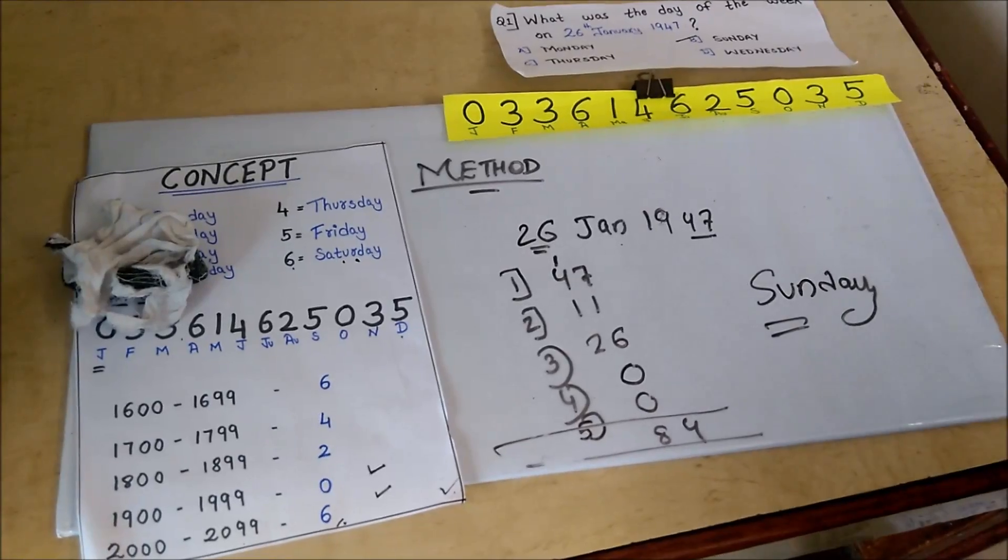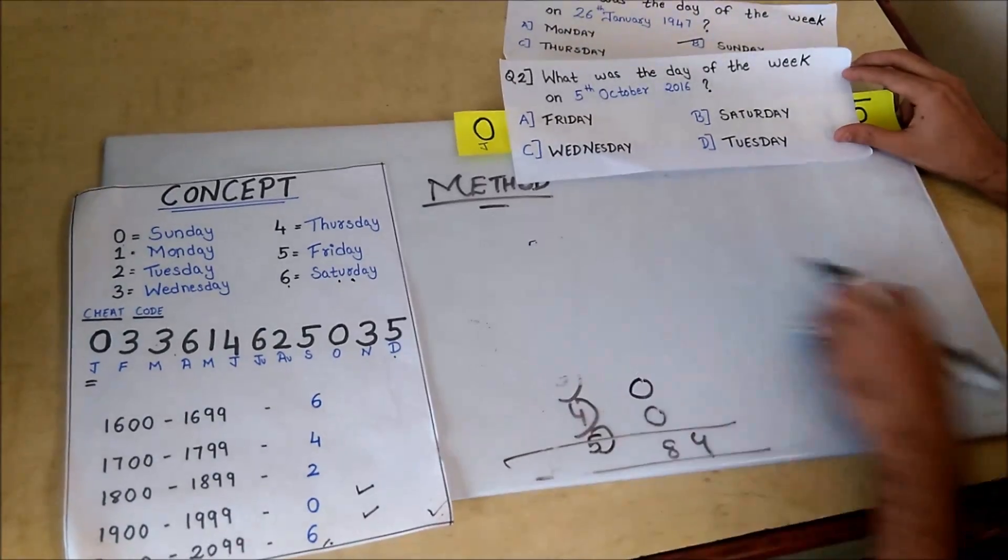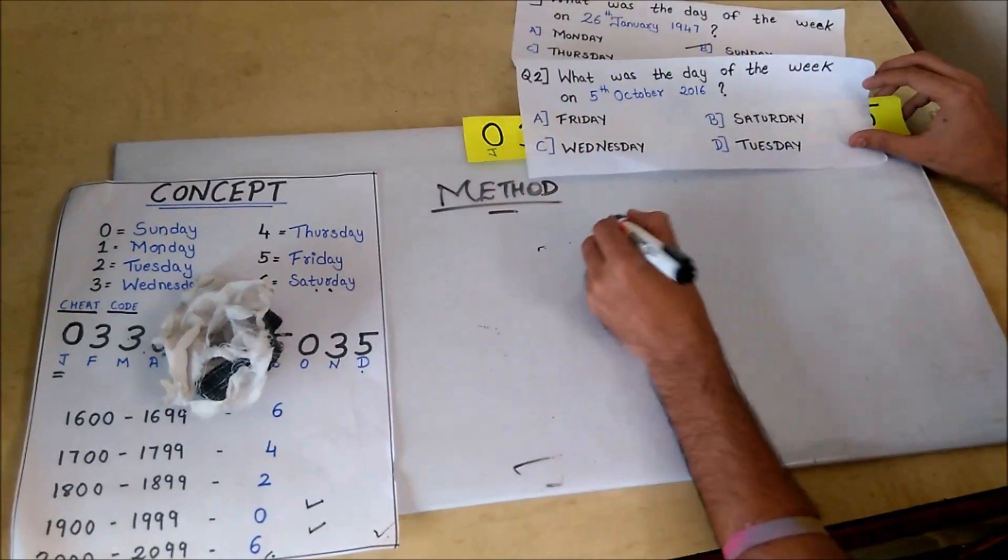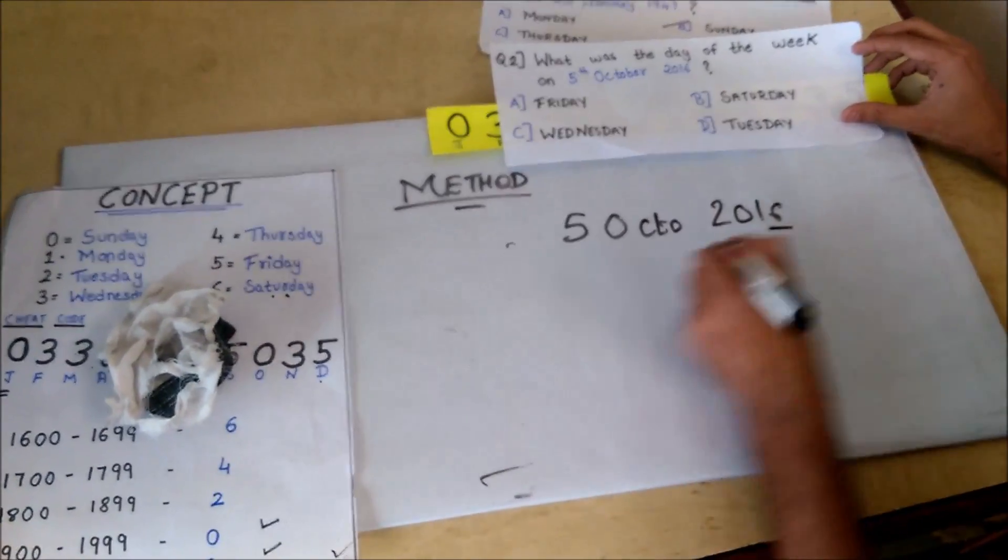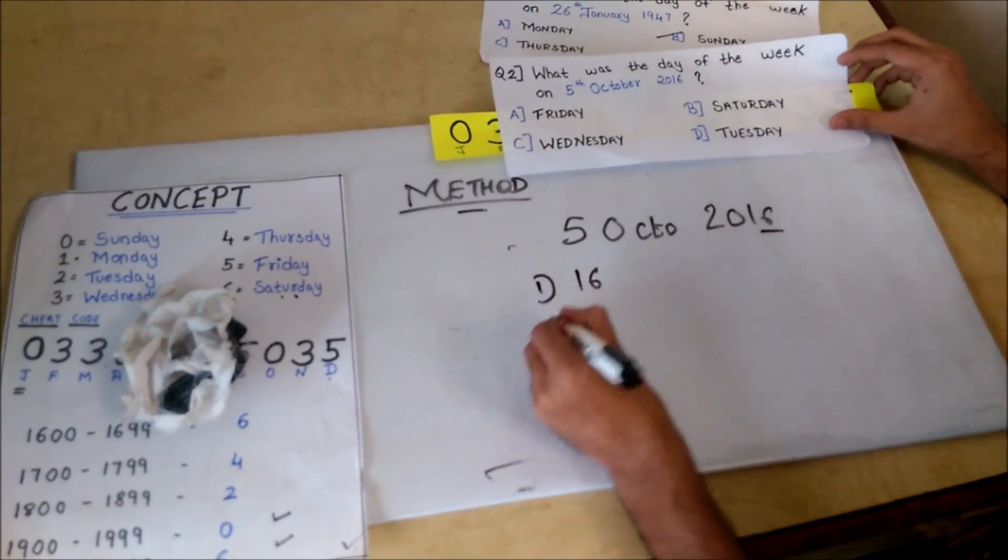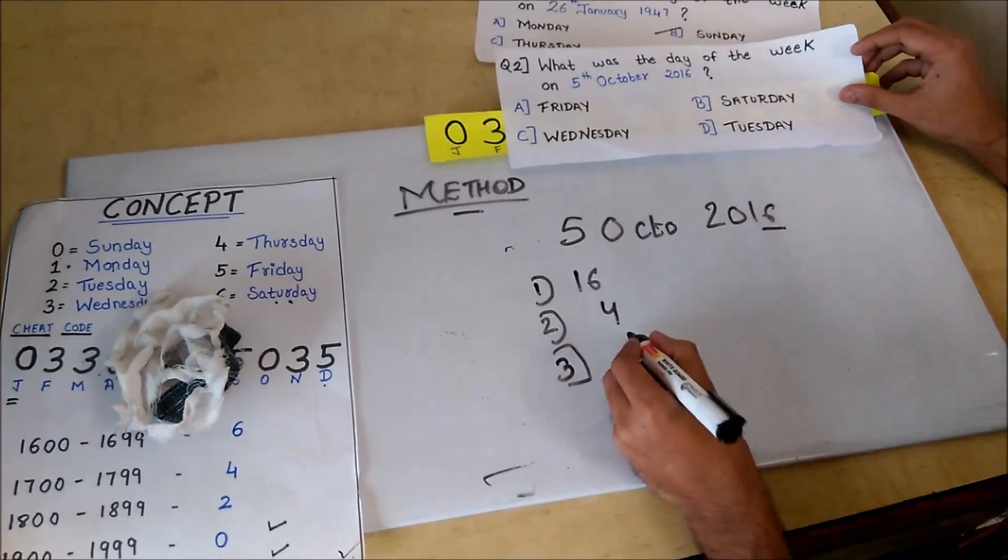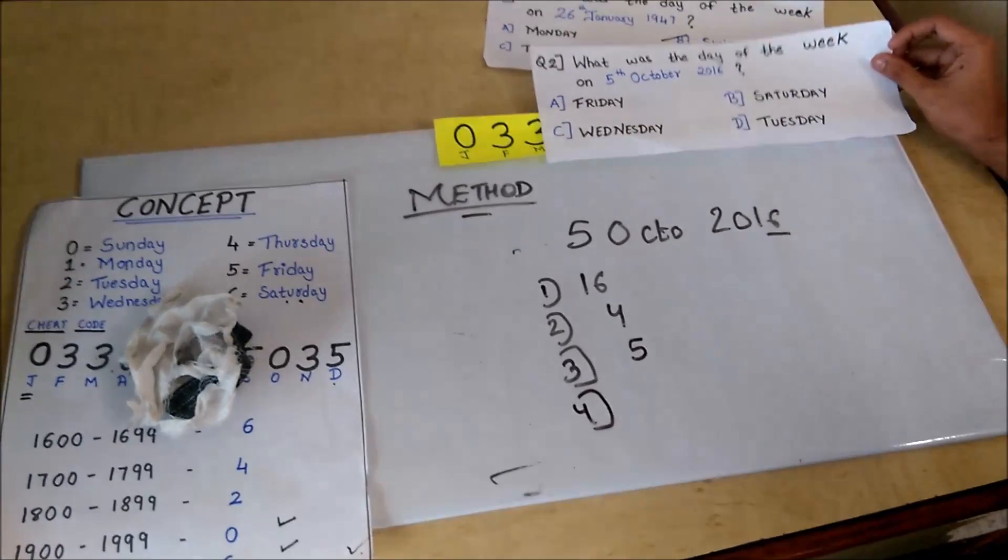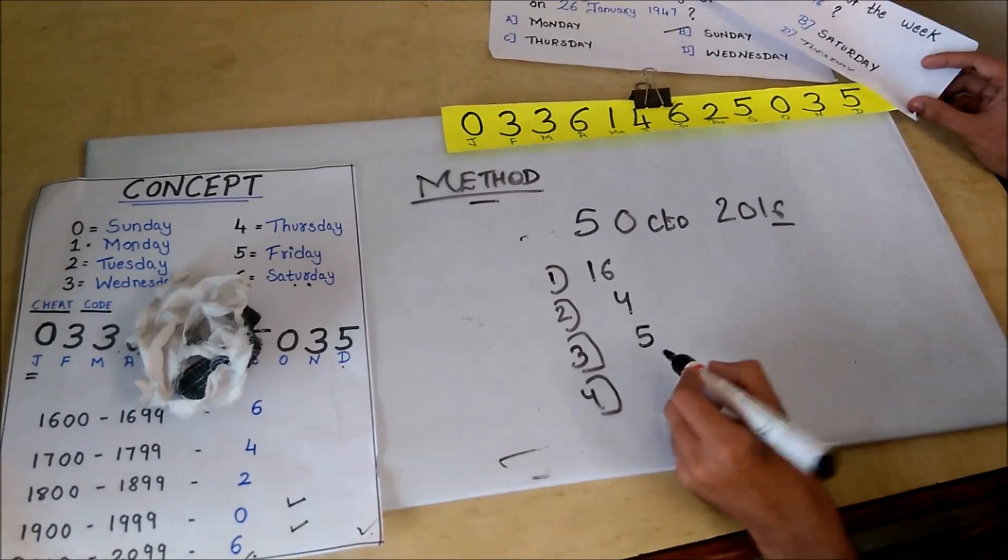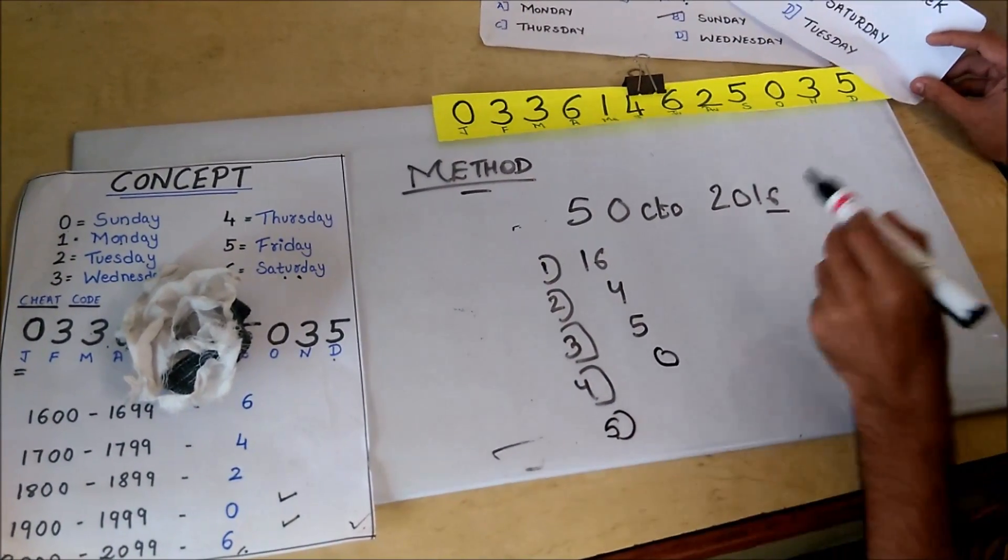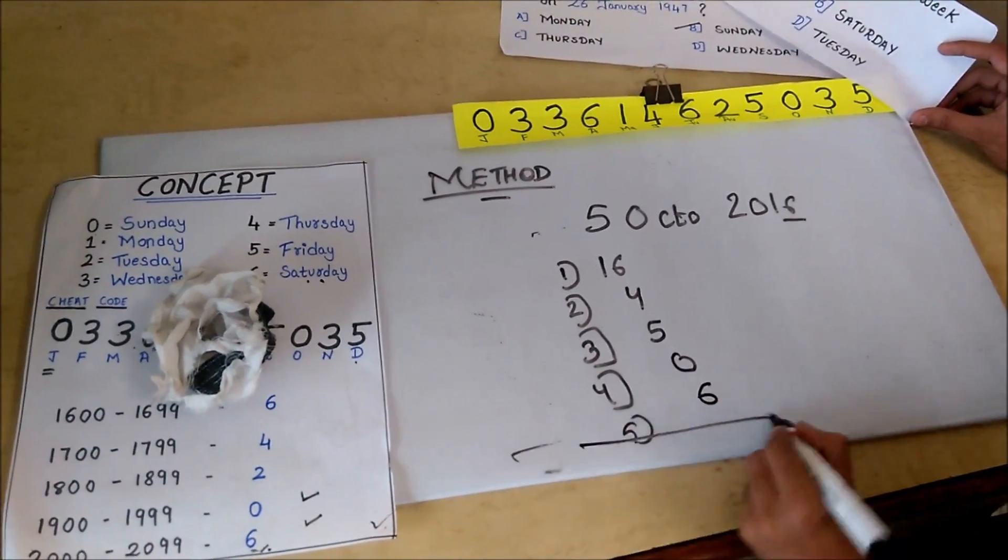Now take the second problem. What was the day of the week on 5th October 2016? Take the last two digits: 16. Divided by 4, so I got 4. Third, we have to take the date: 5. Fourth, the cheat code of the month October. The cheat code is 0. And for the year, as the year is between 2000 series, we will add 6.